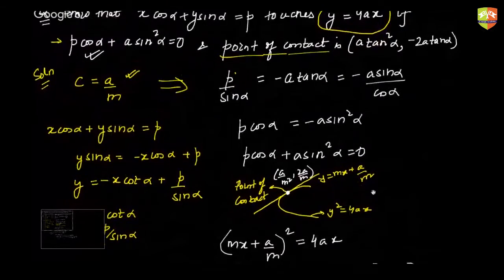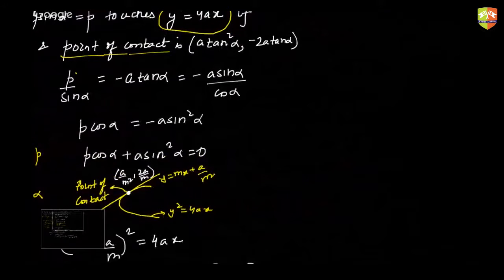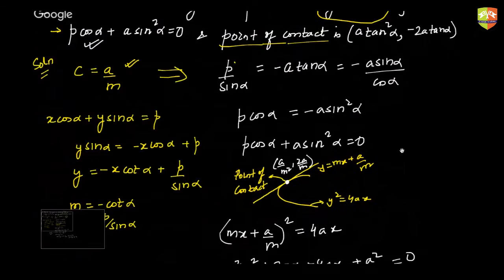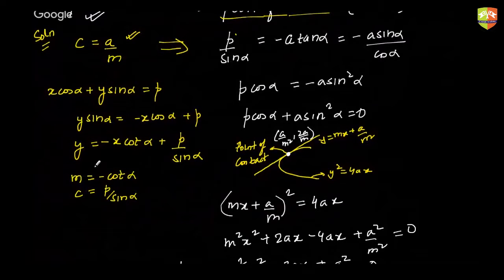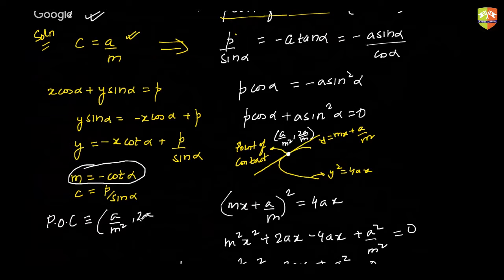Now we need to prove the point of contact is (a·tan²α, -2a·tan α). The role of m is being played by -cot α. So substituting into (a/m², 2a/m): a/(-cot α)² = a·tan²α, and 2a/(-cot α) = -2a·tan α. Hence the point of contact is (a·tan²α, -2a·tan α). Hence proved.